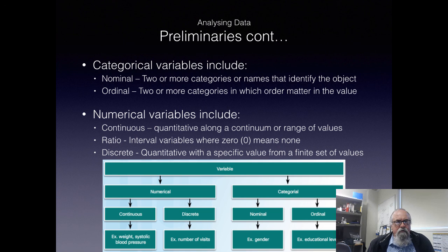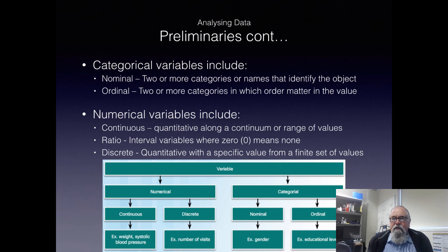We have categorical variables, which include nominal — two or more categories or names that identify the object — and ordinal, where two or more categories exist in which the order matters in the value. Numerical variables can include continuous, which are quantitative along a continuum or range of values such as those from our agricultural sensors measuring pH or salinity. We also have ratio and discrete — quantitative with a specific value from a finite set of values — explained further in a chart.